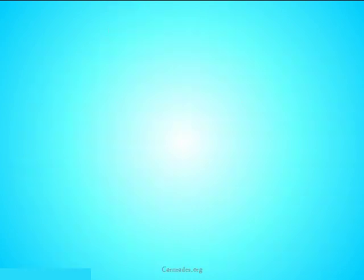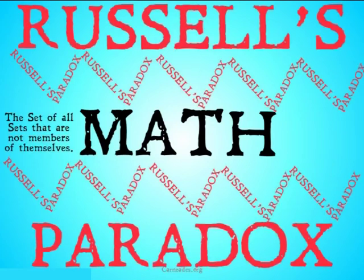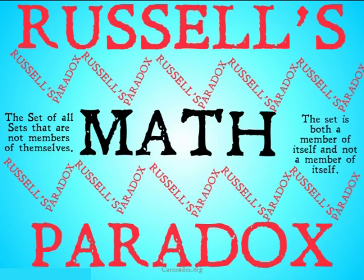When last we left our hero math, he was trapped in the jaws of Russell's paradox. We had the problem of the set of all sets that are not members of themselves, and that set is both a member of itself and not a member of itself. This was a problem for set theory, and therefore it was a problem for math.